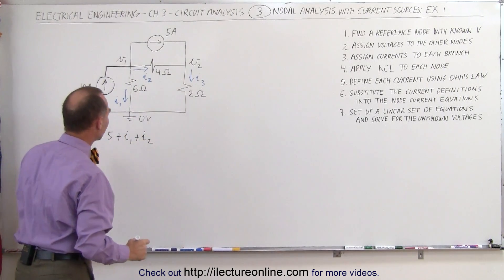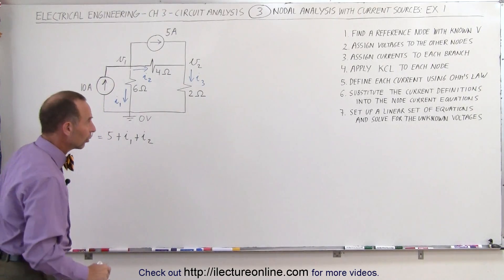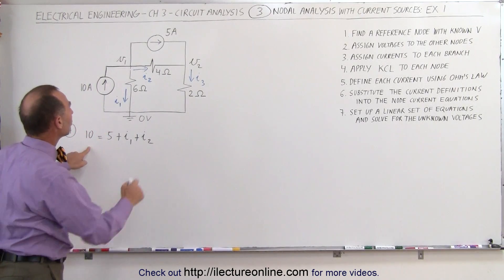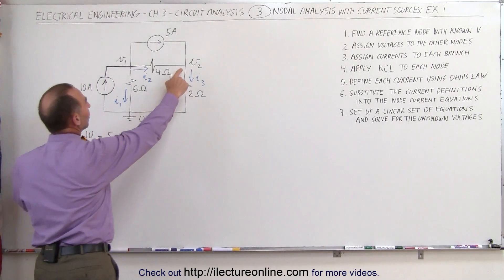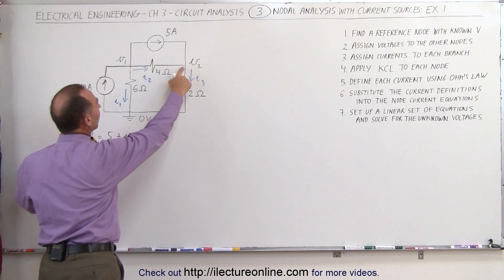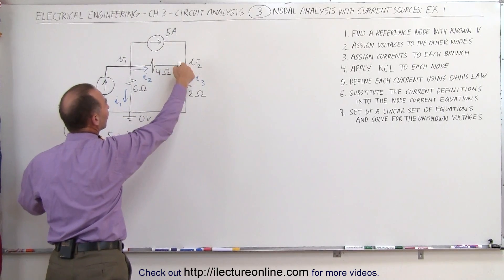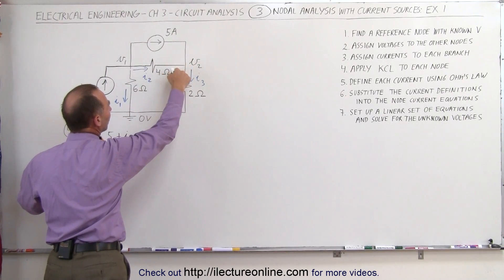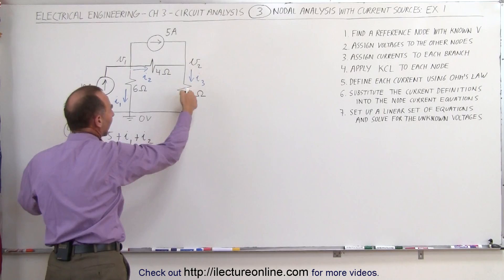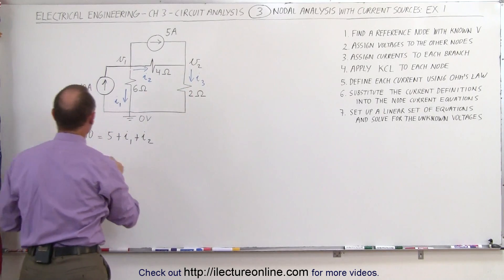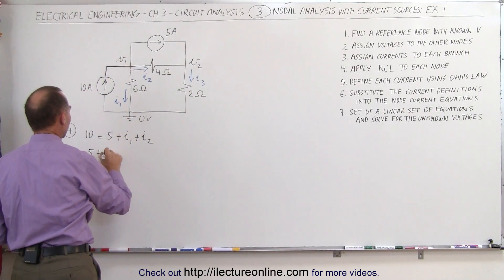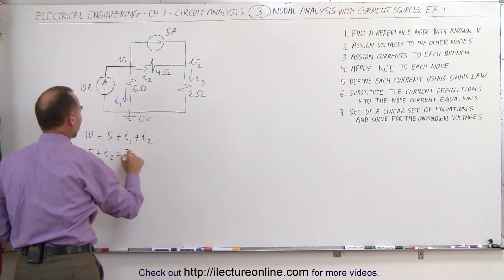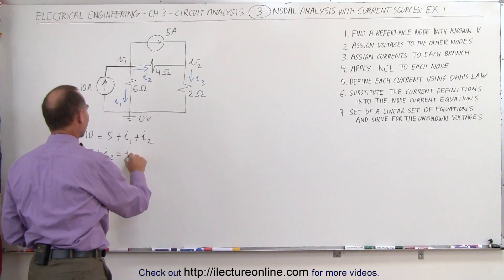The second equation comes from looking at the second node. Here, 5A is entering the node, I2 is entering the node, and I3 is leaving the node. That means 5 plus I2 must equal I3.